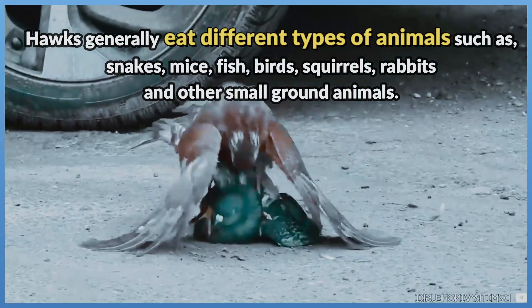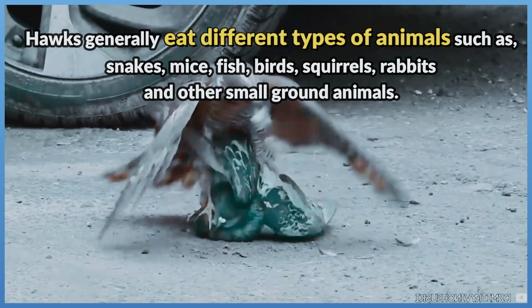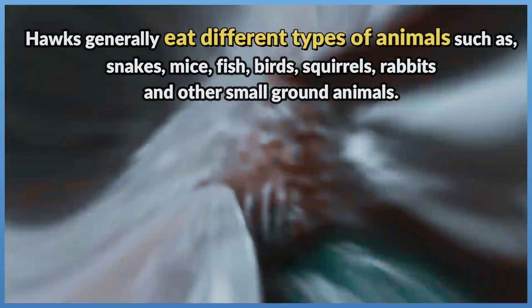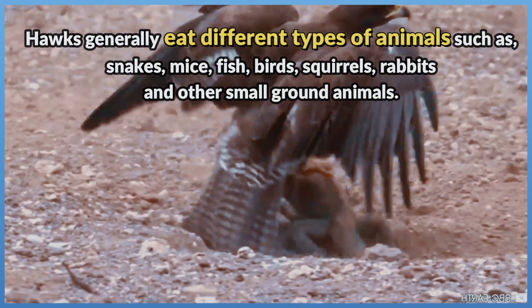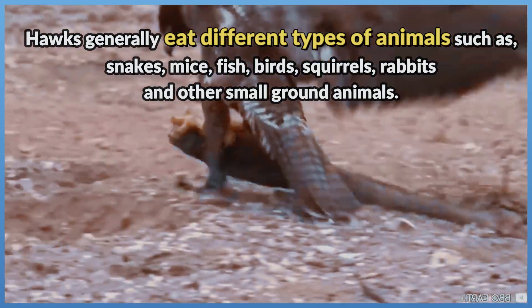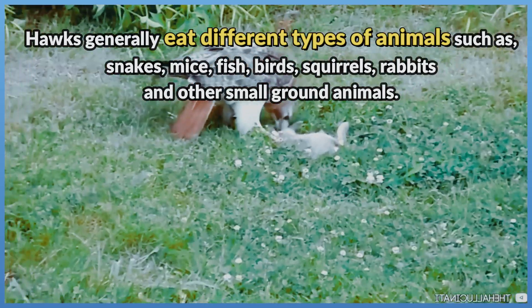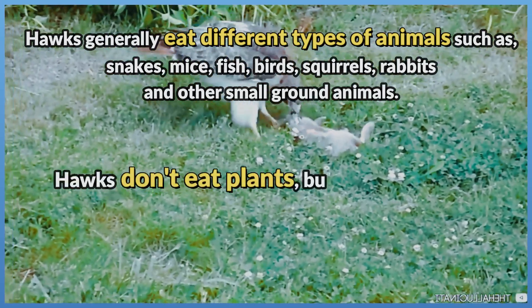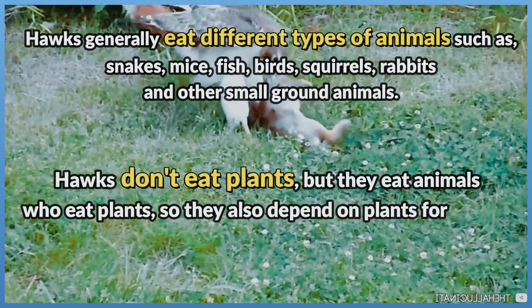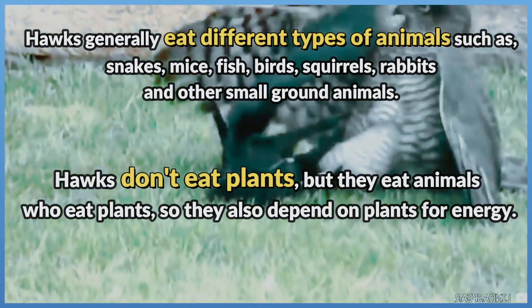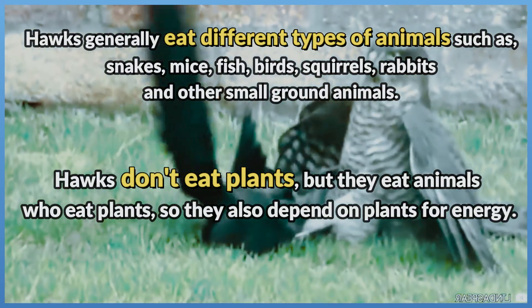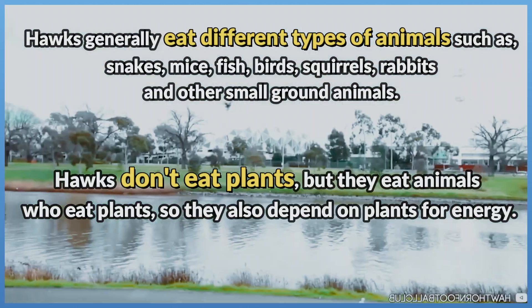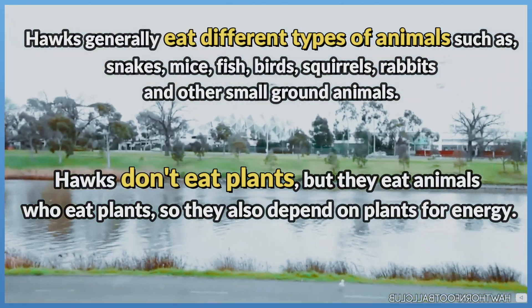Hawks generally eat different types of animals such as snakes, mice, fish, birds, squirrels, rabbits, and other small ground animals. Hawks don't eat plants, but they eat animals who eat plants, so they also depend on plants for energy.